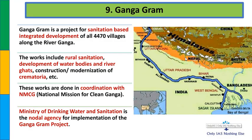आज का आखिरी scheme है गंगा ग्राम. गंगा के पूरे trajectory में जो भी villages connect हैं, उनमें sanitation program रखना है, behavioral changes के बारे में बताना है, घाटों की साफ-सफाई करनी है, चारों तरफ पेड़ लगाने हैं, और crematoria को भी improve करना है. यह project भले ही अलग-अलग ministries से जुड़ा है, लेकिन इसकी Nodal Agency Ministry of Drinking Water and Sanitation है. आशा करता हूँ आपको अच्छे से समझ में आया होगा. Thank you very much for listening so patiently, have a nice day.